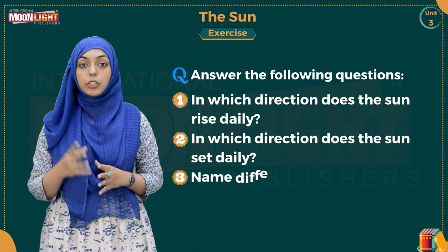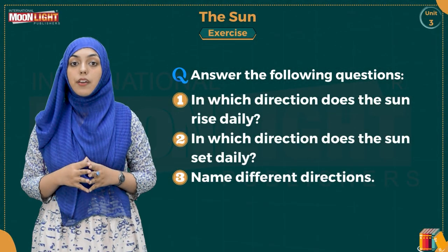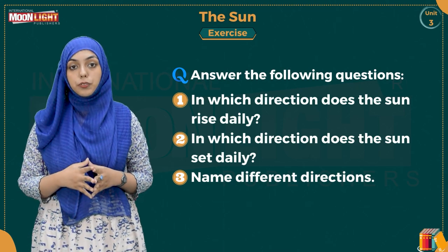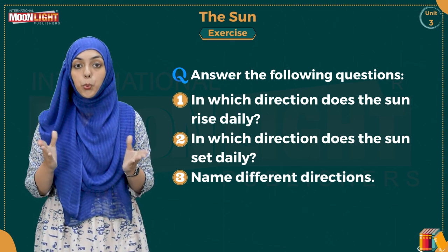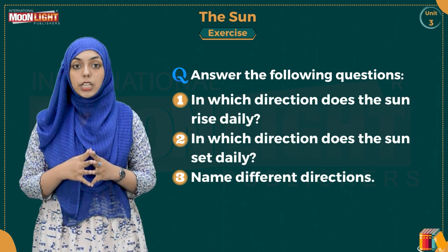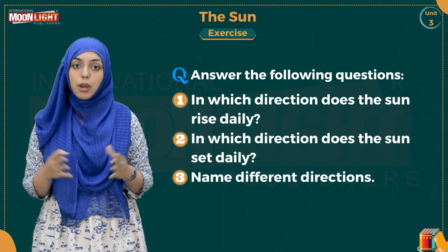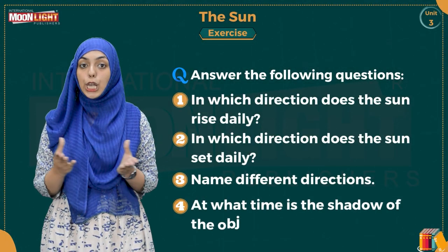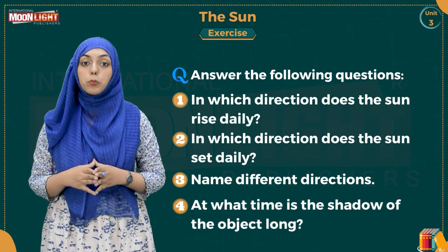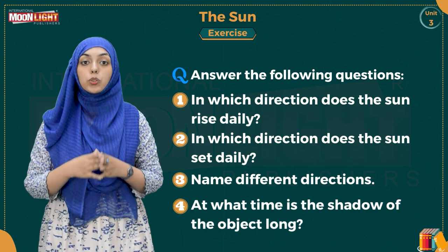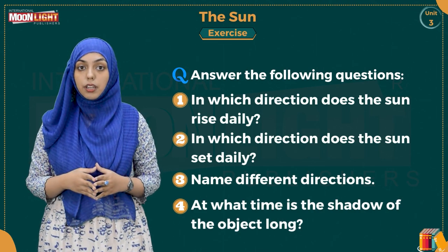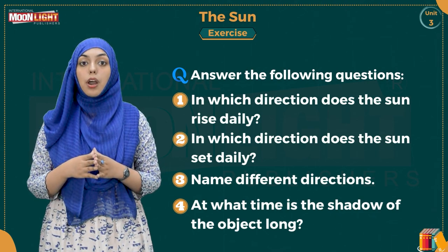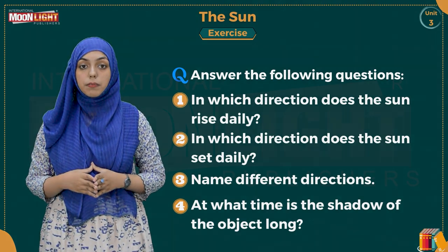Question number 3: Name the different directions. There are 4 different types of directions — East, West, North, and South. Question number 4: At what time is the shadow of an object long? In the morning or in the evening, the shadow of an object is long.